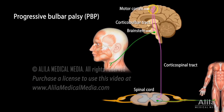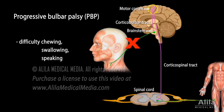Progressive Bulbar Palsy, PBP, affects the lower motor neurons that originate from the brainstem, also known as the bulbar region. Symptoms include difficulty chewing, swallowing, and speaking. PBP is sometimes considered a subtype of ALS, because most PBP patients eventually also develop widespread muscle weakness.